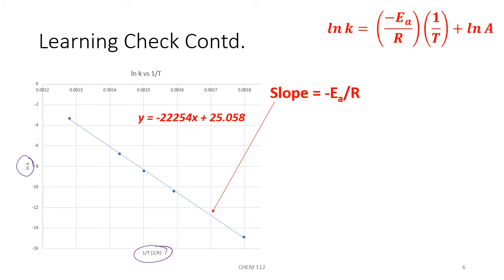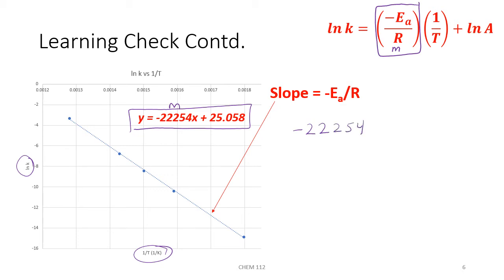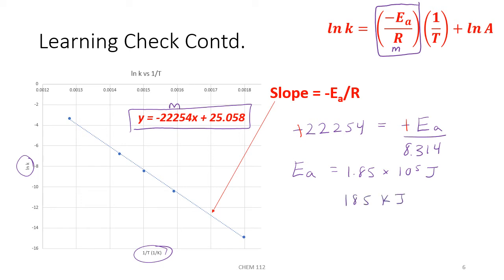When we graph the natural log of K versus 1 over temperature, we get a straight line with a negative slope. That negative slope is equal to negative Ea over R. This comes from the logarithmic form of the Arrhenius equation, which is our m term. If we figure out what the equation of the line is, we can take the value for the slope and set it equal to negative Ea over R. From this graph, the equation of the line gives a slope of negative 22,254, and we set that equal to negative Ea divided by our gas constant R, which has a value of 8.314. The two negative values cancel each other out and become positive. Our activation energy comes out to be 1.85 times 10 to the 5th joules, or 185 kilojoules if we divide by 1,000.